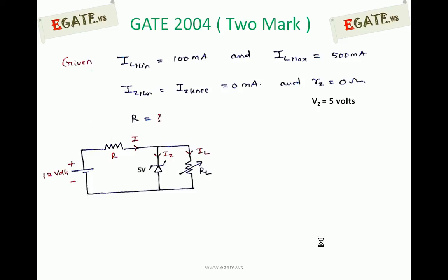And RZ, which is resistance in Zener breakdown region, that is also 0 ohms. And given VZ is equal to 5 volts. VZ is nothing but V0 in this case. Calculate the value of R.